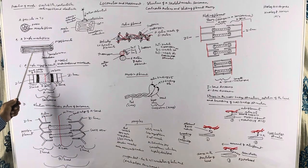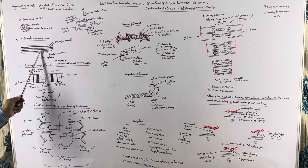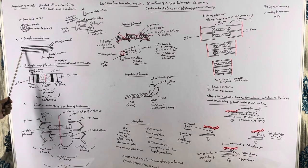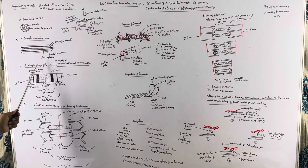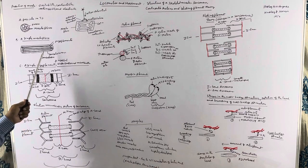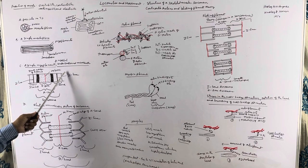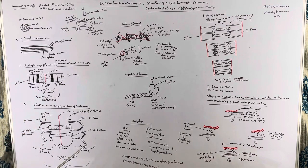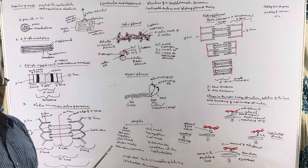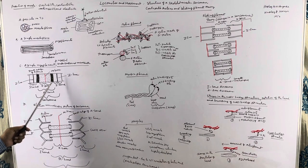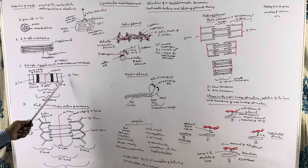Inside the sarcoplasm we find a number of filament structures known as myofilaments or myofibrils. A muscle fiber has a number of parallelly arranged myofibrils. The myofibrils are very long, and under a compound microscope they reveal alternating dark and light bands.